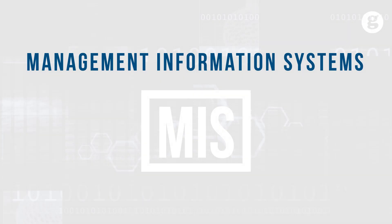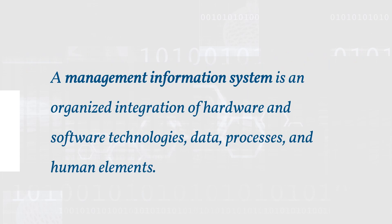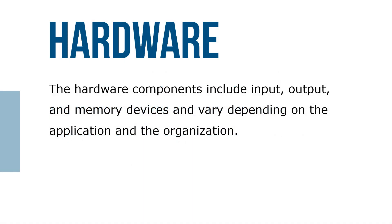Let's take a look at management information systems, known as MIS. A management information system is an organized integration of hardware and software technologies, data, processes, and human elements. The hardware components include input, output, and memory devices, and vary depending on the application and the organization.